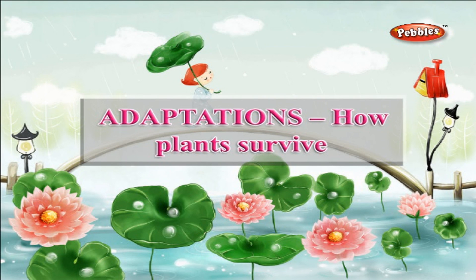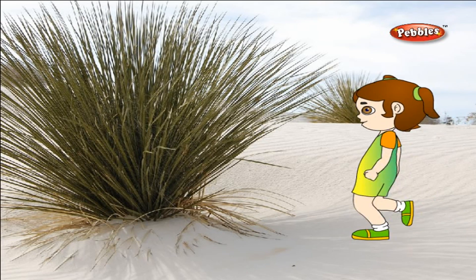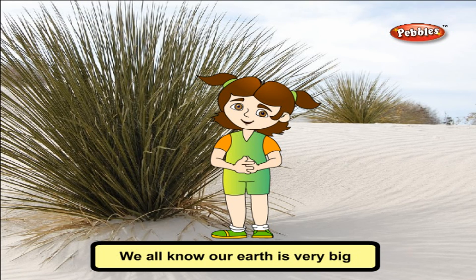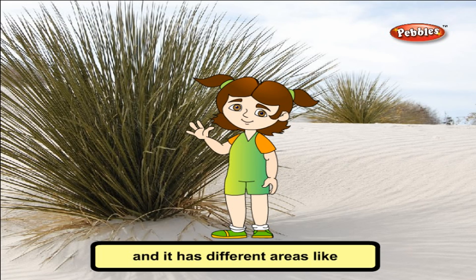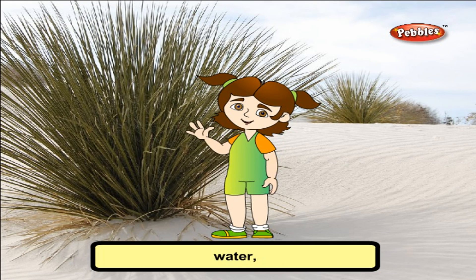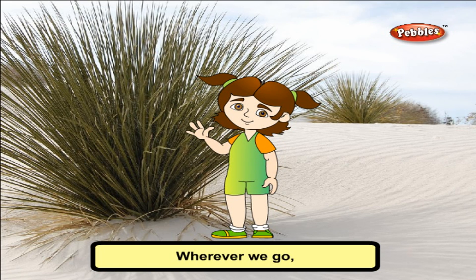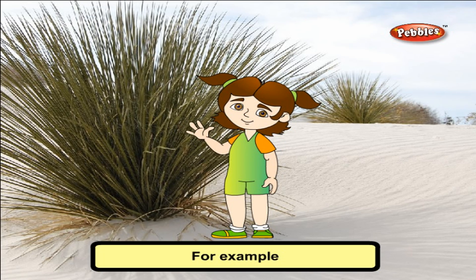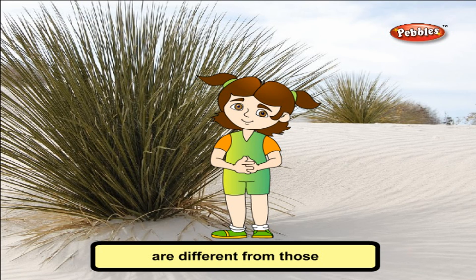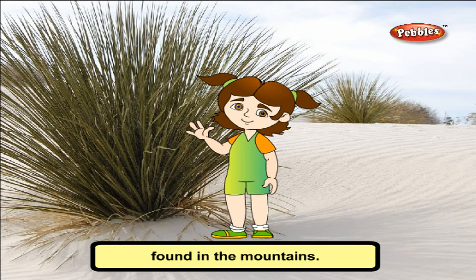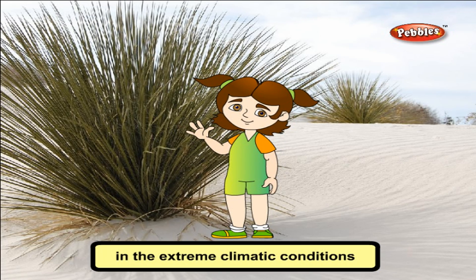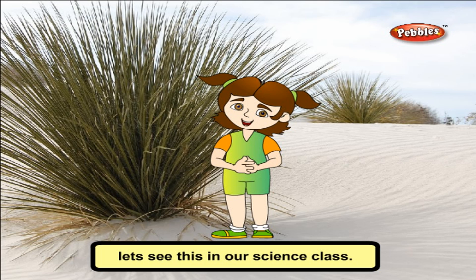Adaptations: How Plants Survive. Good morning friends! We all know our Earth is very big and it has different areas like forest, plain, water, desert, seacoast, etc. Wherever we go, we will find different types of plants and animals. For example, the plants found in the deserts are different from those found in the mountains. Do you know how these plants survive in the extreme climatic conditions? Come on, let's see this in our science class.